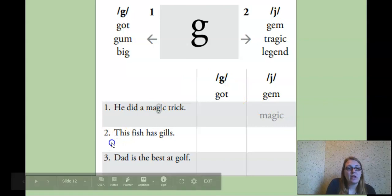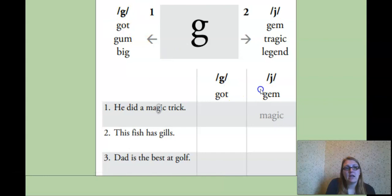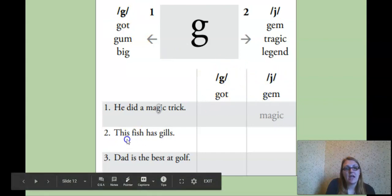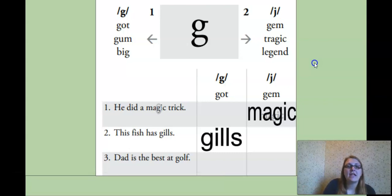Our next one. Look at sentence two. Let's see. Where's the G? G. Oh, there it is. All right. Is it a guh or a juh? Is it gills or jills? This fish has gills or jills? What do you think? Good. Fish have gills. G, g, gills. All right. So we have mad juh, magic, and gills.